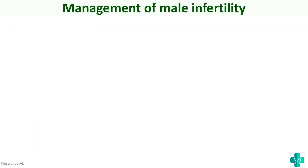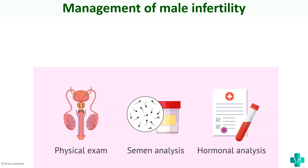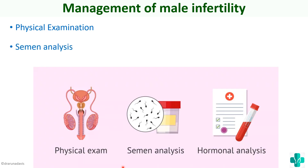Next we will see how to manage male infertility. Management involves physical examination, semen analysis, as well as hormonal analysis. On physical examination, we look for congenital causes like Klinefelter syndrome or Noonan syndrome, post-testicular causes hindering sperm release, and any varicocele or cryptorchidism causing decreased sperm production. To identify semen related problems, semen testing is done, and hormonal analysis is performed to check for pre-testicular causes.